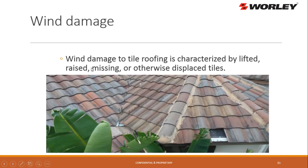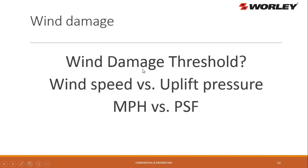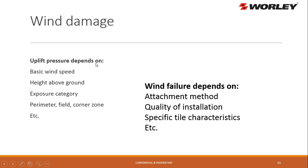Wind damage to tile roofs is characterized by lifted tiles, raised tiles, missing tiles, or otherwise displaced tiles. Looking at this low profile S clay tile roof, down at the eaves — where it's most susceptible — you get a missing tile: wind damage. Wind damage thresholds depend on wind speed versus uplift pressure in pounds per square foot. The uplift pressure depends on basic wind speeds, height above the ground, exposure category, the perimeter of the roof, field tiles, corner zones, ridge gaps, etc.